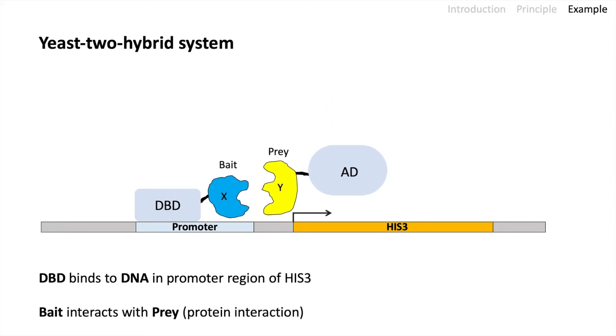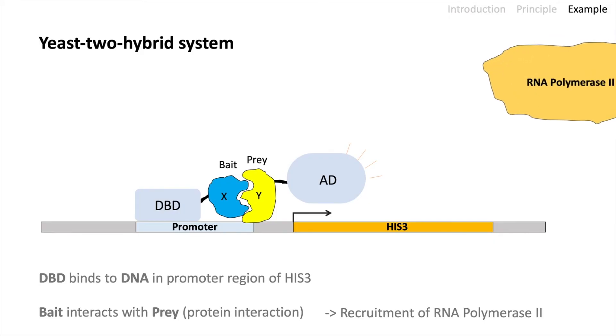Here in this case the proteins show interaction. The bait interacts with the prey. The activator domain comes close to the HIS3 gene region, recruits RNA polymerase 2, which can then transcribe the HIS3 RNA.